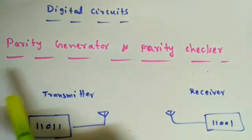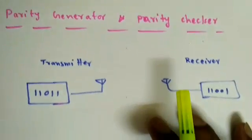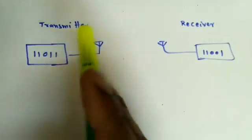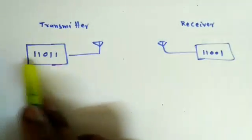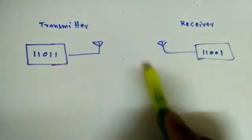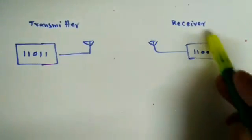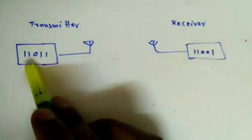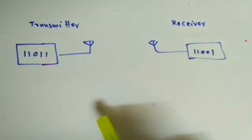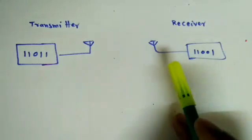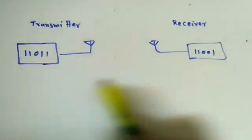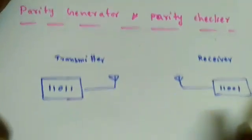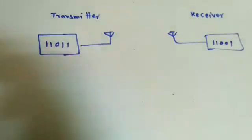In this lecture we are going to discuss parity generators and parity checkers. When sending digital data from transmitter to receiver, suppose some noise is added in the free space medium. When we receive the data, an error may have occurred in one of the bits due to noise effects. In this scenario we need some error detection as well as correction circuit, and for that reason we use the parity generator and parity checker.